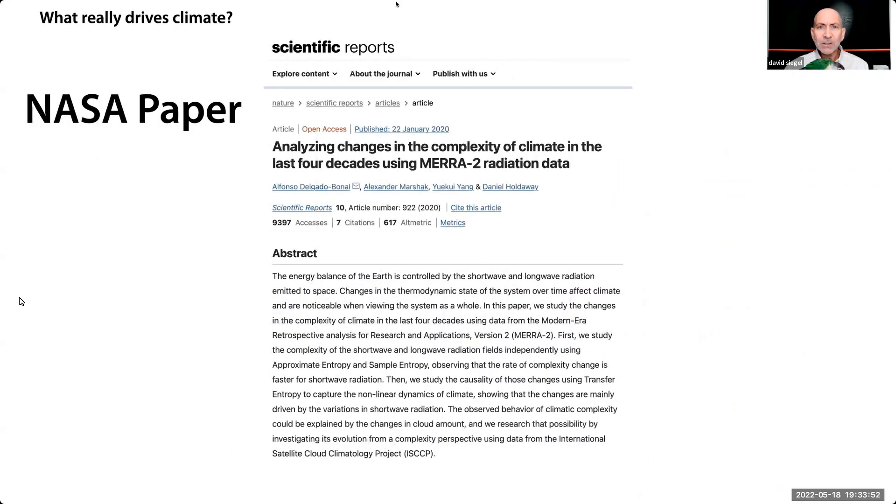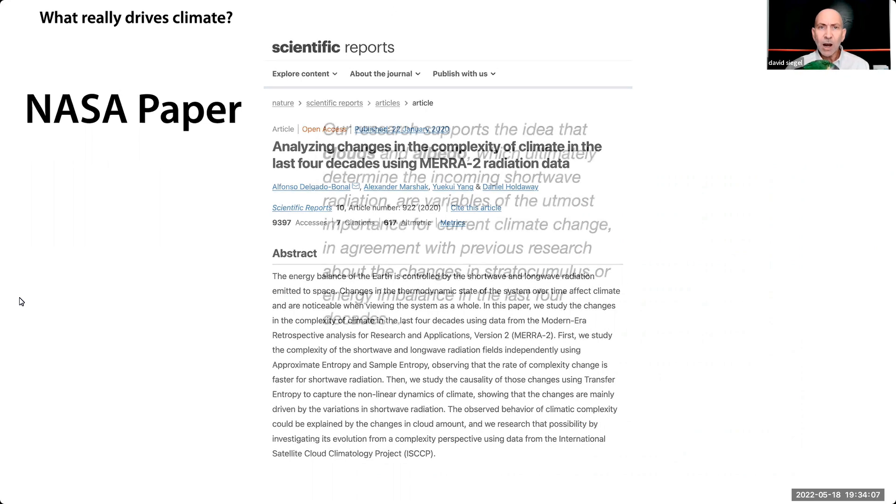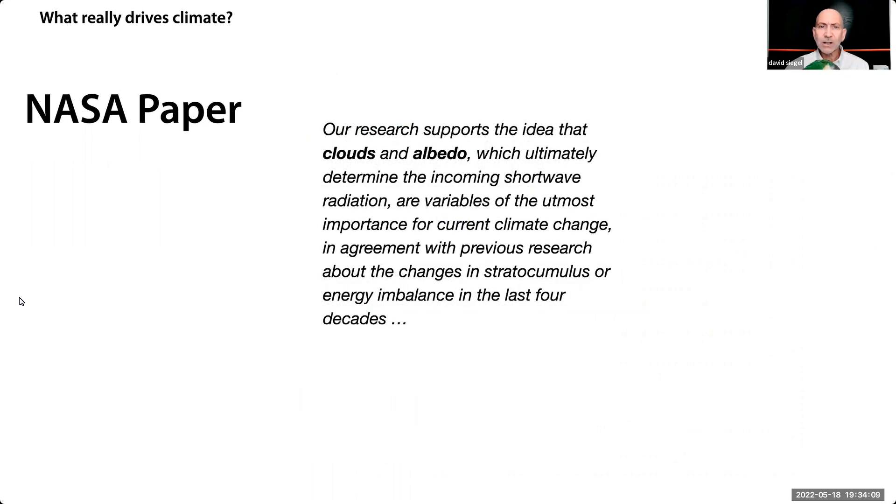What really drives climate? A lot of people trust NASA, but most NASA employees don't know about a recent paper from NASA studying the Earth from a new satellite placed at the Lagrange point between Earth and Sun. I want to read you their conclusion. Our research supports the idea that clouds and albedo, which ultimately determine the incoming shortwave radiation, are variables of the utmost importance for current climate change. In agreement with previous research about changes in stratocumulus or energy imbalance in the last four decades, clouds and albedo are downstream effects of sun and ocean patterns. No mention in this paper of CO2.